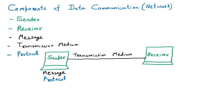Now let's understand each component one by one. First, the message — it is some kind of data or information that can be communicated. It can be an image, an audio file, a video file, or any number — anything. This message is with the sender. The sender is a device used to transmit the data; the sender can be a computer, a mobile phone, a video camera, or anything which is going to send out the data.